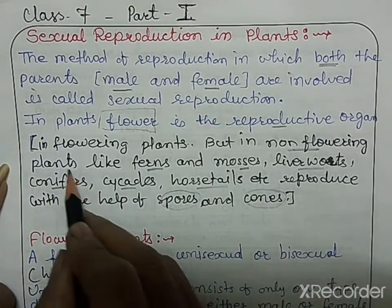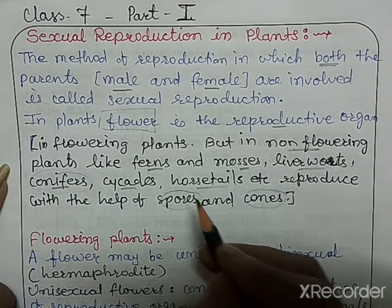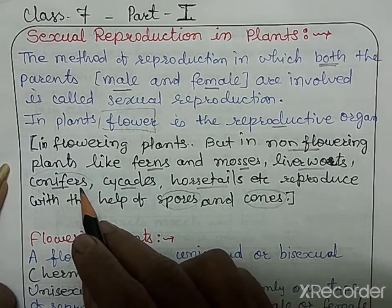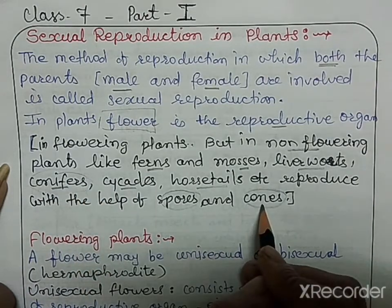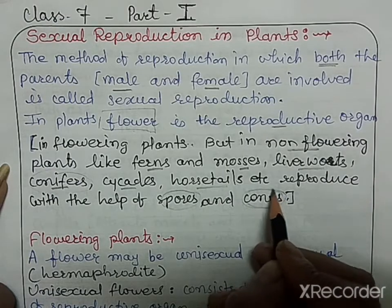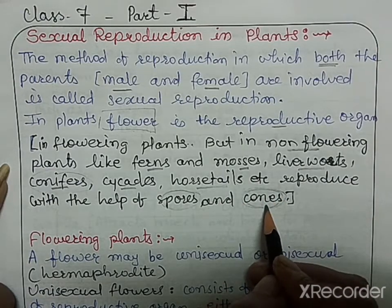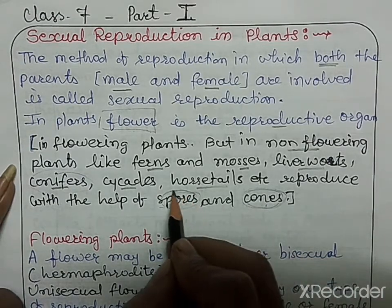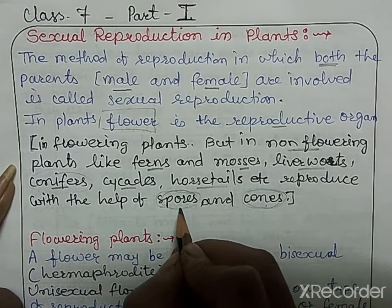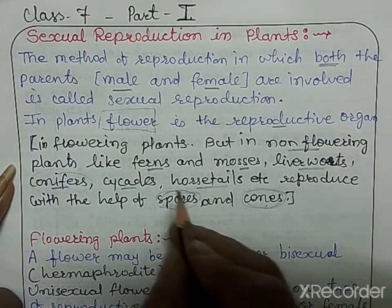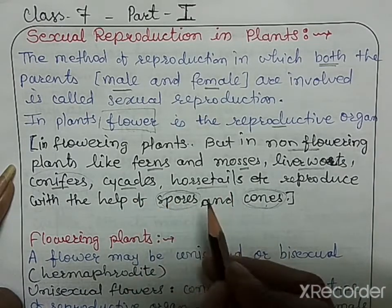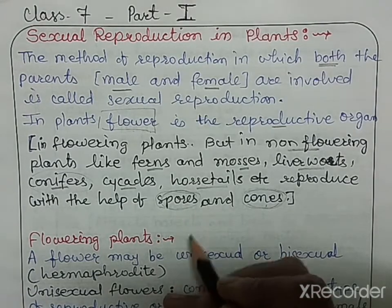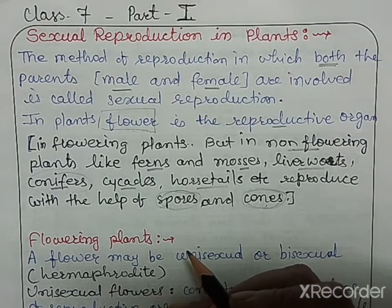Conifers and their cones were already studied in adaptations of plants. These cones are the reproductive part and contain seeds — naked seeds without any cover. Spores are also a reproductive part of non-flowering plants. So ferns, mosses, and the other examples given are non-flowering plants that reproduce with spores and cones.